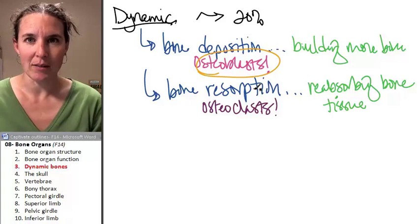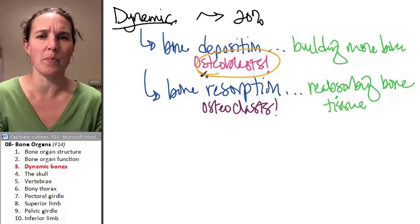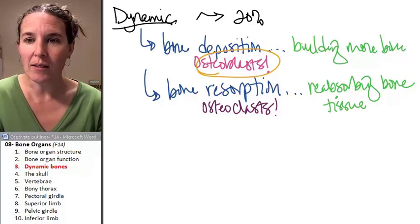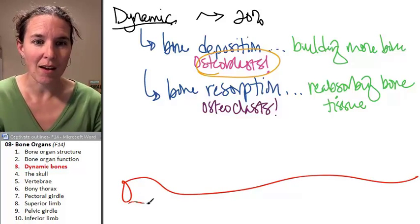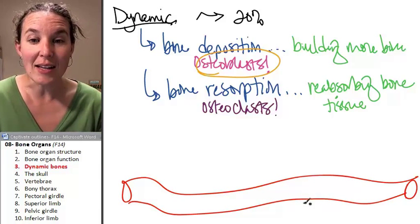Osteoblasts are making it happen. They're in there. They're building more bone tissue. And here's my question for you. A little bit of Pictionary. For real, what is that? It's not a snake. That is a blood vessel.